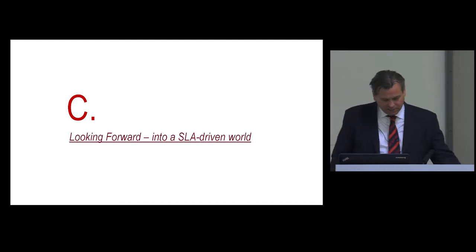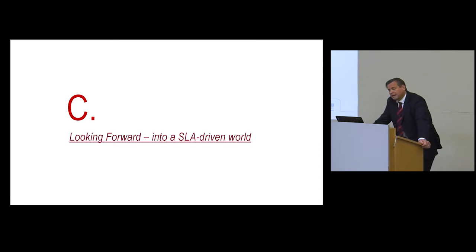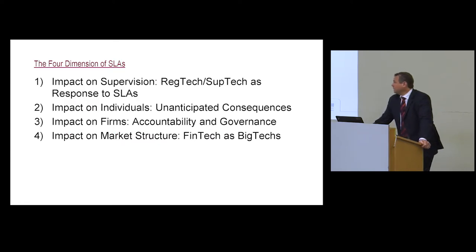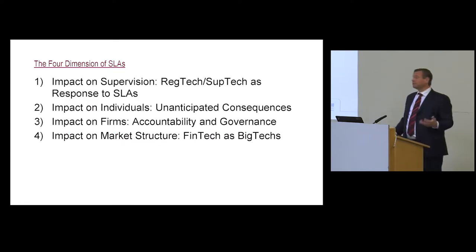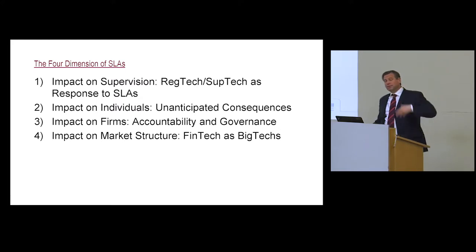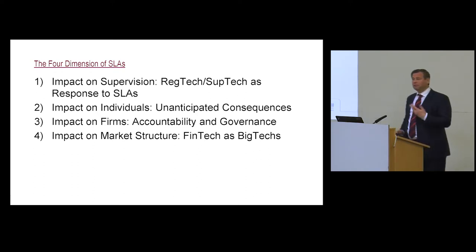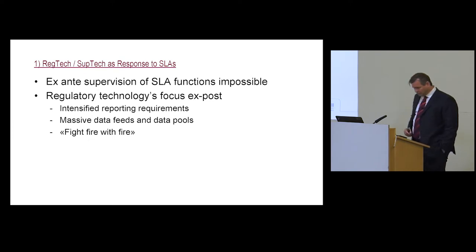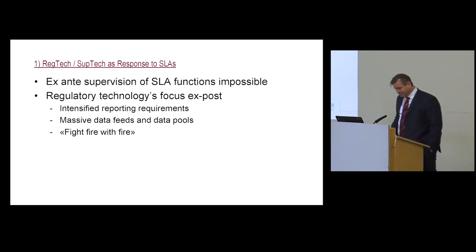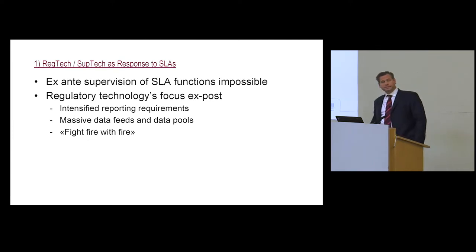What is the lesson from self-learning algorithms, and what do they mean for our policy approach? We need to consider the impact on four different levels: first, supervision; second, individuals; third, firms; and fourth, market structure. All of them justify comment. Starting with the impact on supervision: the traditional supervisor who asks for a paper file and checks a box is entirely out of the game — all these decisions are happening too fast.